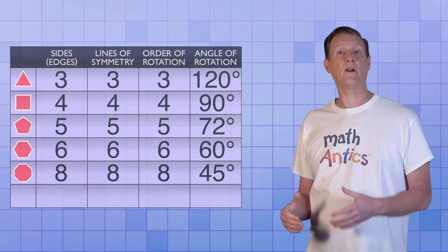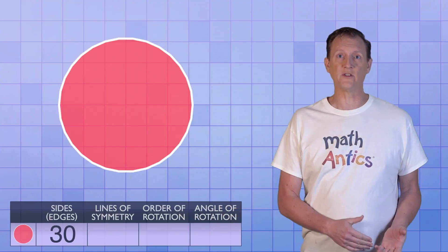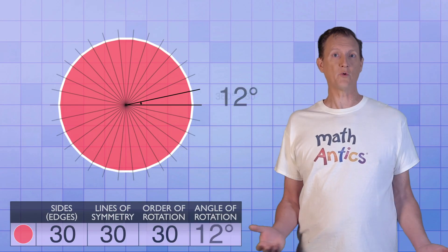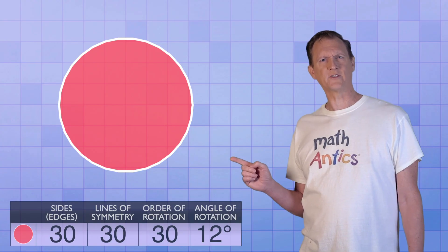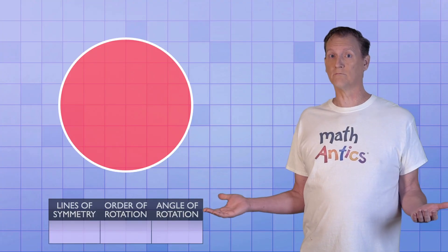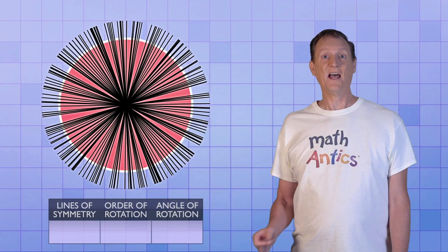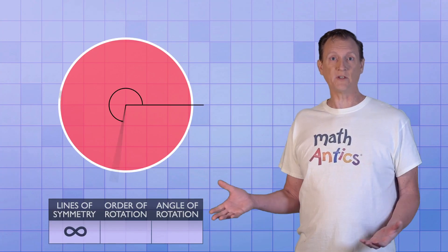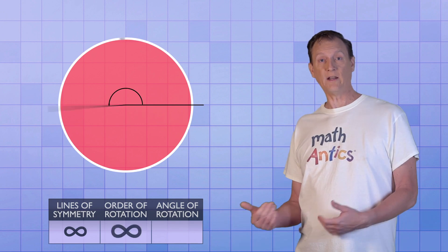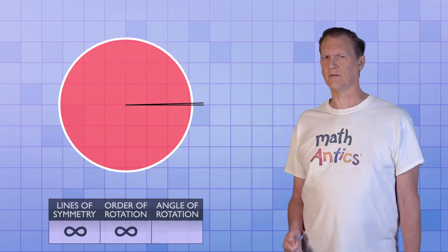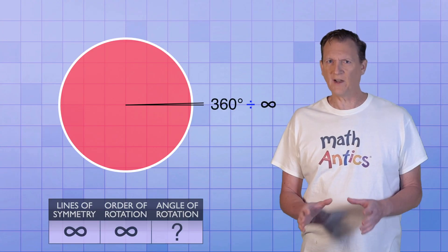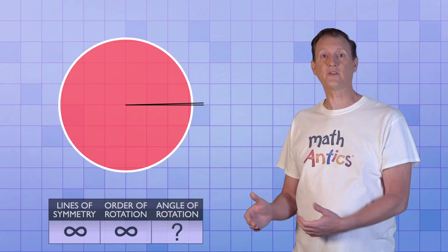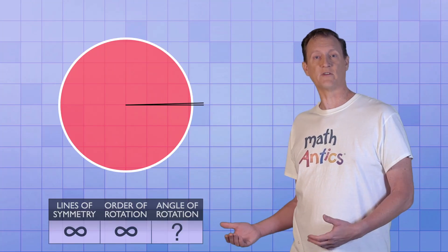These patterns work for any regular polygon no matter how many edges it has. If you have a regular polygon with 30 edges, it has 30 lines of symmetry and ORDER 30 rotational symmetry, with an angle of rotation of 12 degrees. That starts to look a lot like a circle. Any line that goes through the center of a circle is a line of symmetry, so it has infinitely many lines of symmetry. Any amount we rotate the circle results in it matching, so it has ORDER infinite rotational symmetry. Dividing 360 degrees by infinity approaches zero, so we say the angle of rotation of a circle is zero degrees.